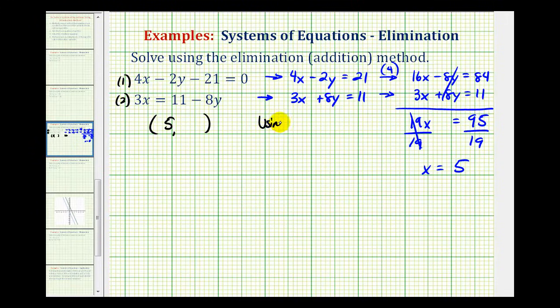So using equation 1, we would have 4 times 5 minus 2y minus 21 equals 0. Well, this would be 20 minus 2y minus 21 equals 0. Well, 20 minus 21 is negative 1.